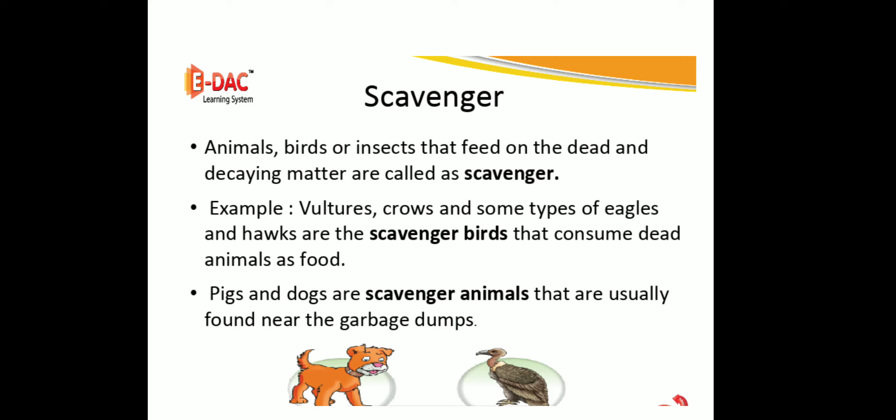Listen: animals, birds, or insects that feed on the dead and decaying matter are called scavengers. For example, vultures, crows, and some types of eagles and hawks are scavenger birds that consume dead animals as food. Pigs and dogs are scavenger animals that are usually found near the garbage dump.